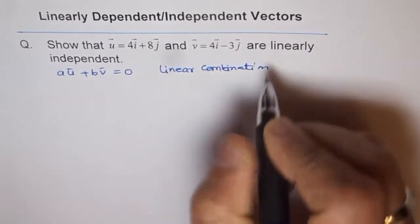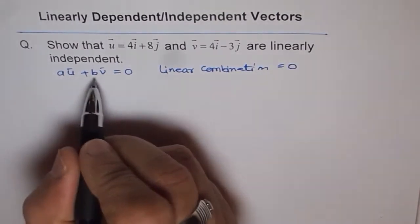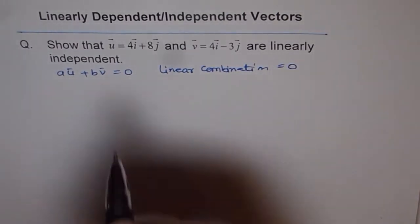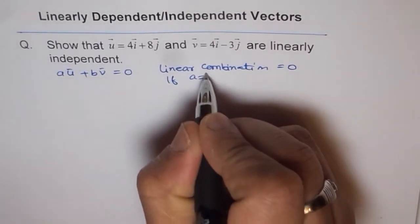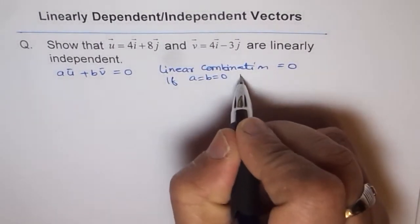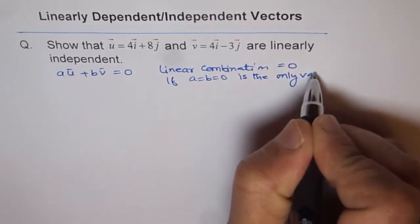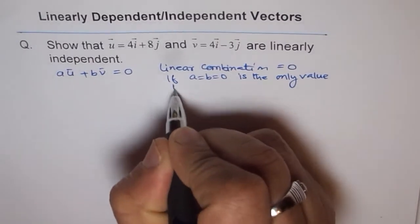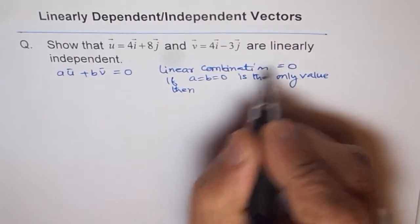And try to show that linear combination is equal to 0 for what values of a and b. Now if a equals b equals 0 is the only value, then they are linearly independent.